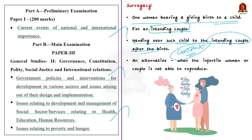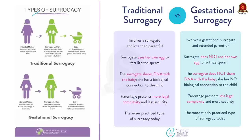Surrogacy comes as an alternative when an infertile woman or couple is not able to reproduce. There are two types of surrogacy: gestational surrogacy and traditional surrogacy.